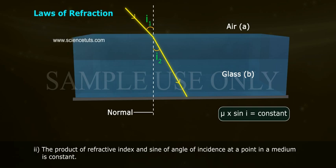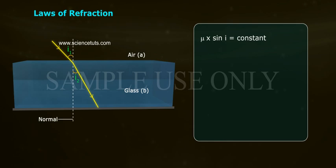2. The product of refractive index and sine of angle of incidence at a point in a medium is constant. Mu into sine i equals to constant. Mu 1 into sine i 1 equals to mu 2 into sine i 2.